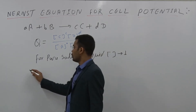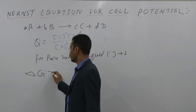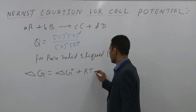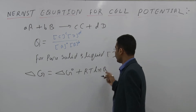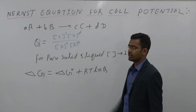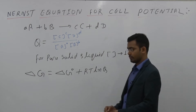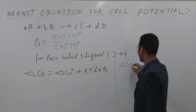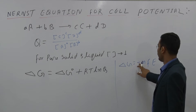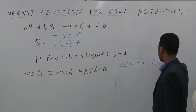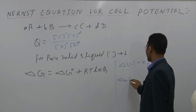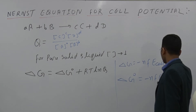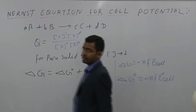From thermodynamics we know that ΔG = ΔG° + RT ln Q, where Q is the reaction quotient. We also know that ΔG = -nFE_cell, and ΔG° = -nFE°_cell.